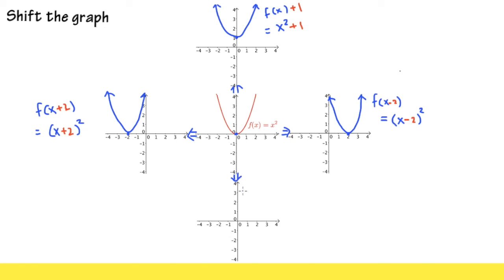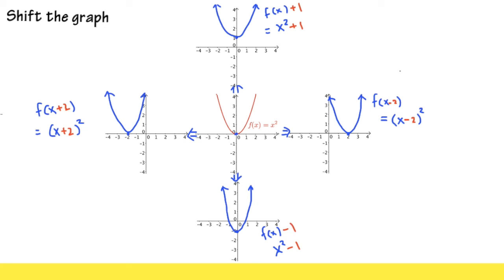Finally, let's bring the graph down 1 unit, so the vertex will be at 0, negative 1. We keep the same shape and subtract 1 after the x squared to bring it down 1 unit. In function notation, that will be f of x minus 1 afterward, giving us x squared minus 1. The goal for this video is that you need to know how these movements happen and how to write equations based on these movements — shiftment movements.